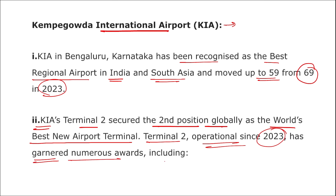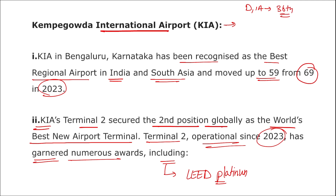Kempegowda International Airport's Terminal 2 secured second position globally as the World's Best New Airport Terminal. Terminal 2 has been operational since 2023 and has garnered numerous awards, including the LEED Platinum Certification (Leadership in Energy and Environmental Design) and the UNESCO Prix Versailles World's Most Beautiful Airport award. Delhi's international airport secured 36th position as the best airport in India and South Asia. Mumbai's international airport dropped to 95th (was 84th in 2023), and Hyderabad's airport moved up to 61st position in 2024.